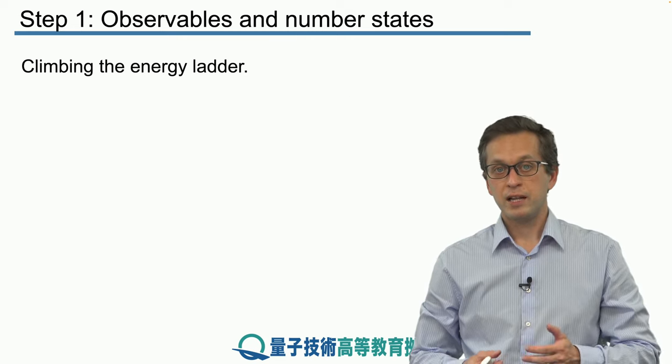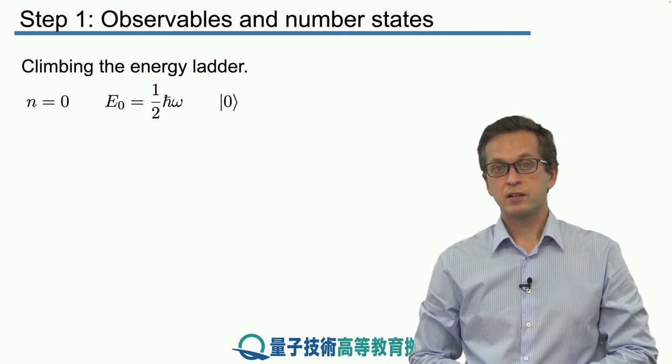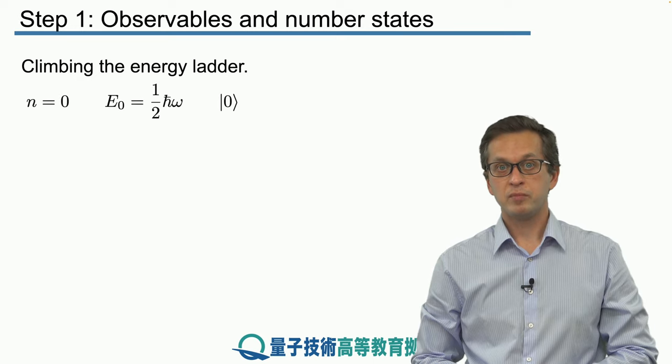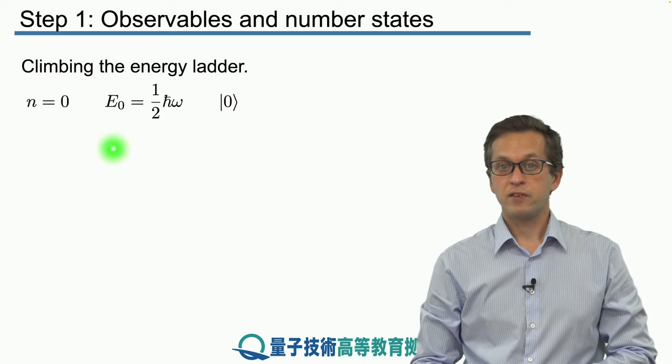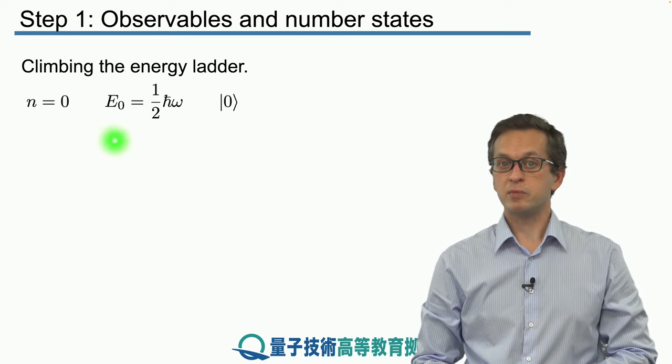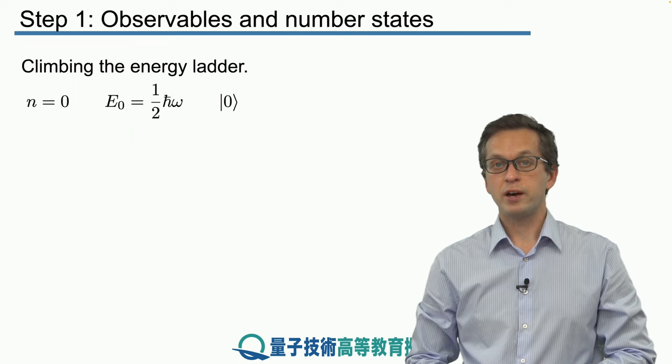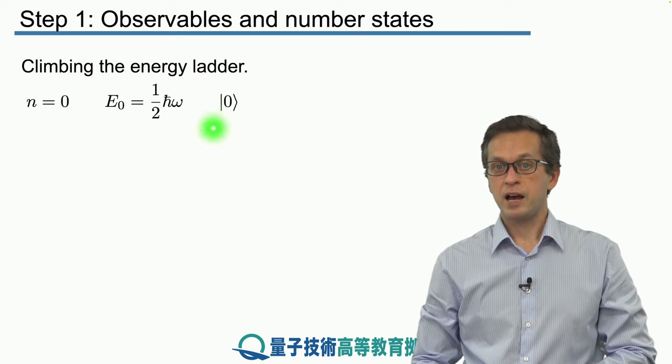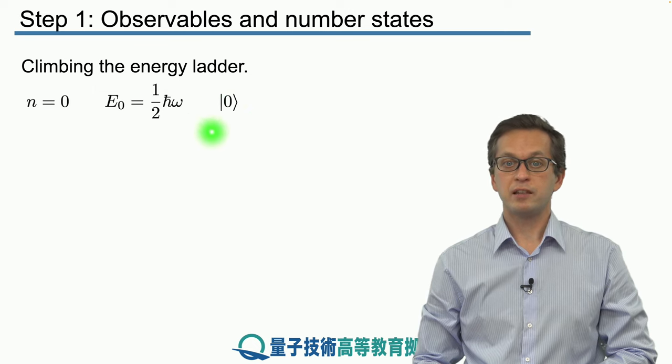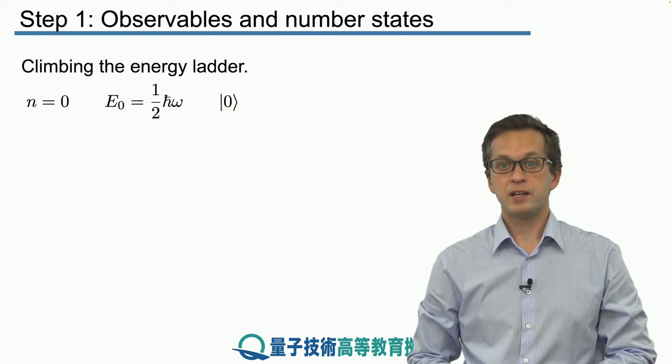Let's write out some of these states, starting from the lowest energy state, n = 0. The energy is finite, not zero: E₀ = (1/2)ℏω. The eigenvector is written as |0⟩, and we call this state the vacuum.